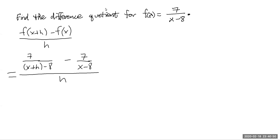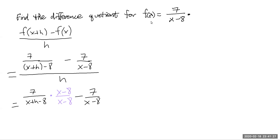Now what are we going to do? We're going to simplify the numerator by finding a common denominator. So we have 7 over x plus h minus 8, multiply by x minus 8 over x minus 8. Subtract 7 over x minus 8, and multiply by x plus h minus 8 over x plus h minus 8. Remember, this is still all over the big division bar, all over h.